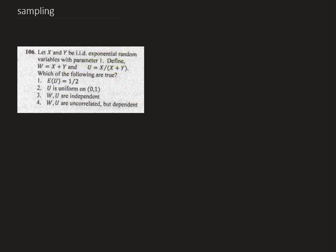So we are given two iid exponential random variables x and y with parameter 1. Now we have to define w and u where w is x plus y and u is x by x plus y. Now we have to find which of these given options are correct.